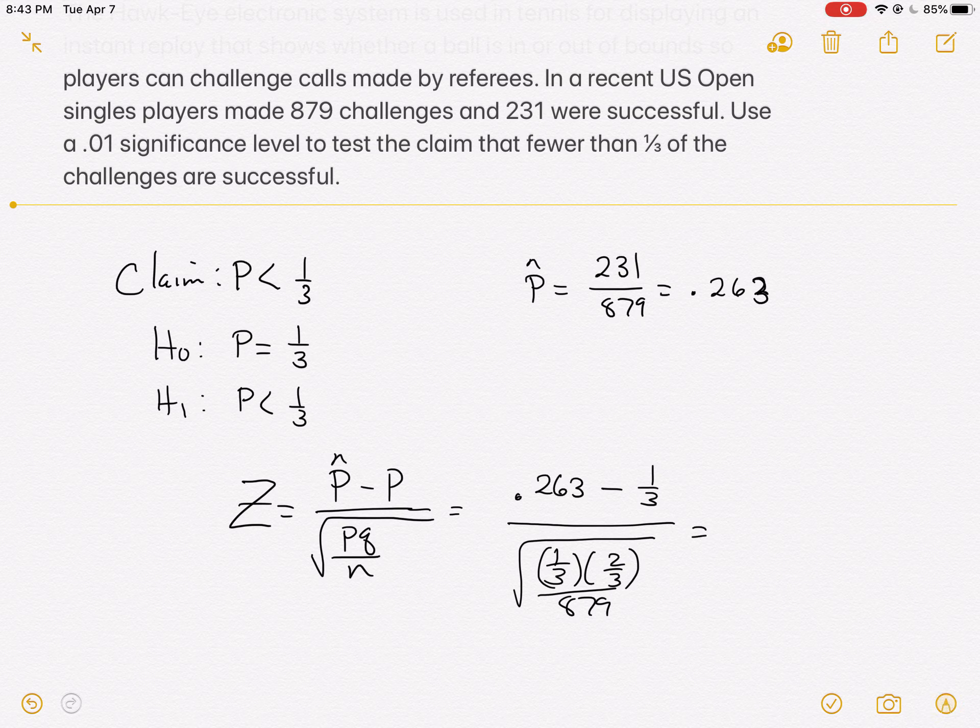That's 0.263 minus 1 third, divided by the square root of 1 divided by 3 times 2 divided by 3, divided by 879. We get a pretty big z score, negative 4.42. Negative 4.423 is what I actually got, but 4.42 would be how it's rounded.